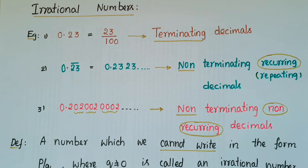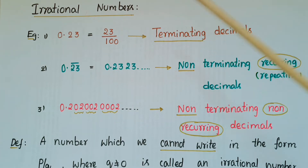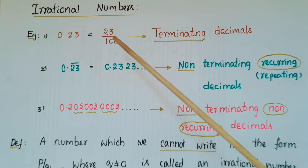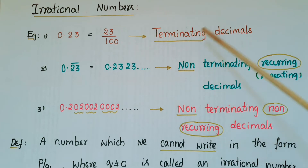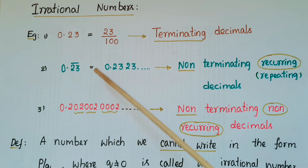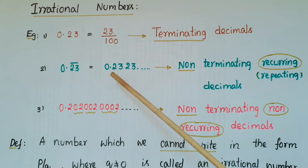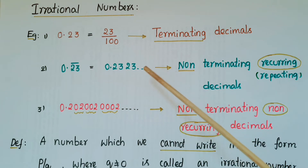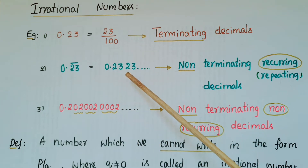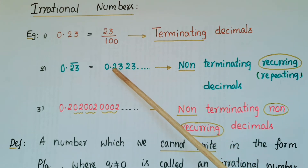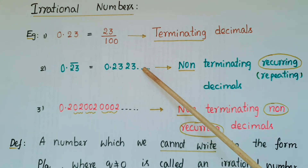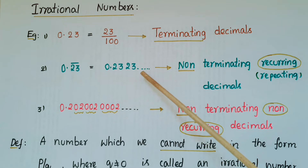Hello everyone, today I am going to talk about irrational numbers. For example, 0.23 can be written as 23 by 100 — this is a terminating decimal. 0.23 bar we can write as 0.2323 and so on. These types of numbers are non-terminating and repeating decimals, because the decimal part does not terminate and 23 keeps repeating.